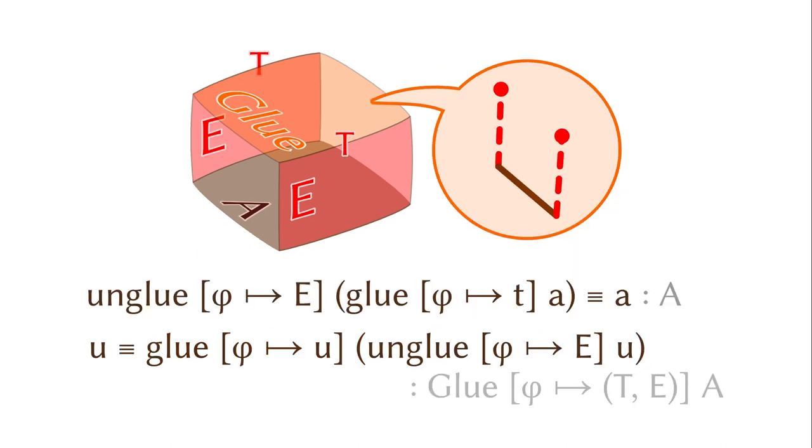The equality also explains why the bracket at the end of the judgment has U directly. Now we know the constructor and the eliminator. They work together as expected. The eliminator will project out the bottom, and we can rephrase every element using the glue constructor. So we just answered all the basic five questions about the type.